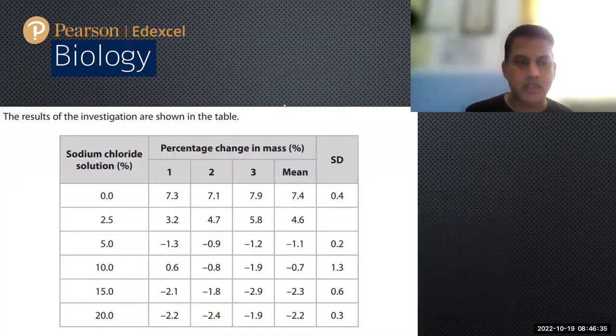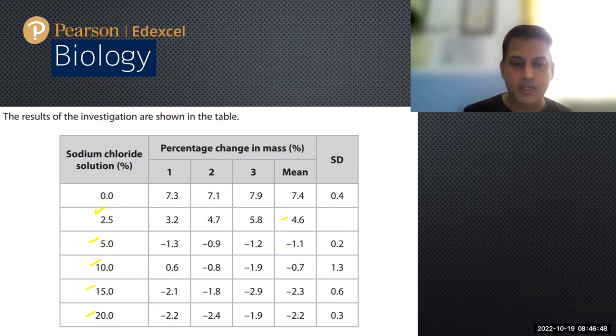Here's the result: sodium chloride solution at 2.5, 5, 5, 10, 15, 20, and the mean values 4.6. Then mean values decrease: minus, minus, minus, minus, minus, minus 2.2 at the last. The standard deviation represents this column.